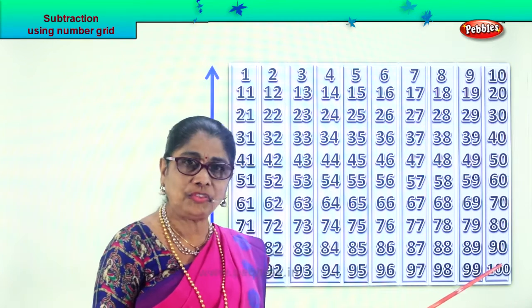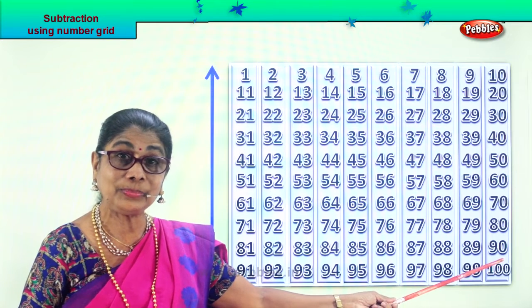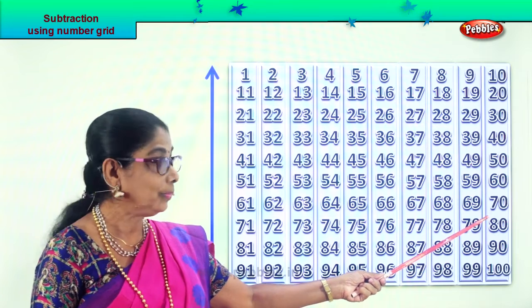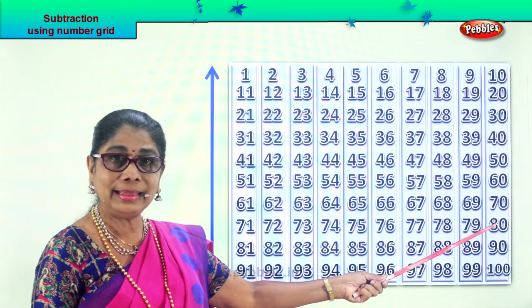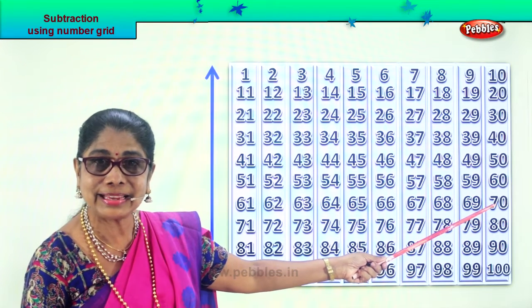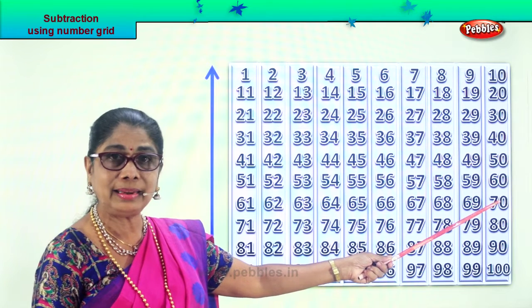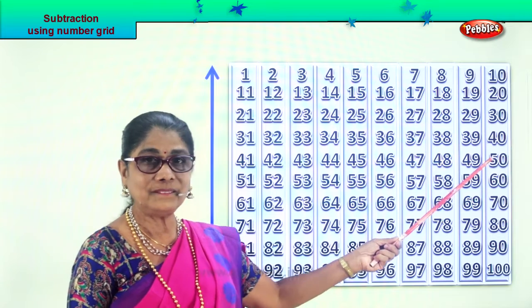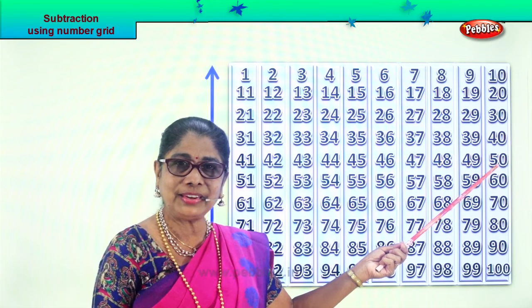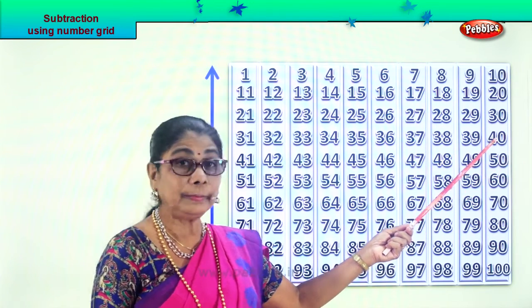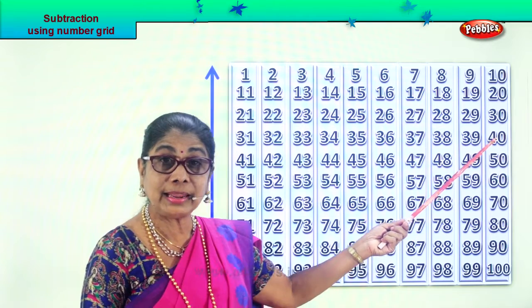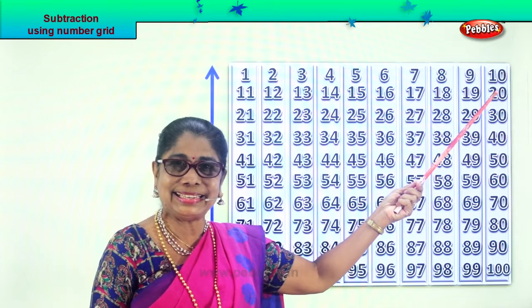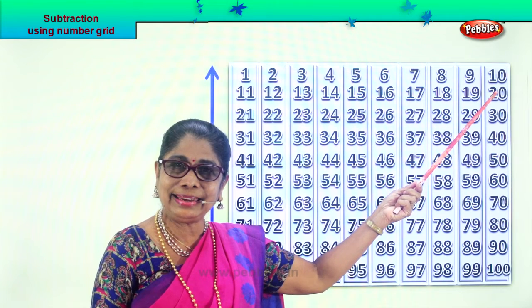Look at this — 100. 100 take away 10 — 90. 90 take away 10 — 80. 80 take away 10 — 70. 70 take away 10 — 60. 60 take away 10 — 50. 50 take away 10 — 40. 40 take away 10 — 30. 30 take away 10 — 20. 20 take away 10 — 10. Very good!